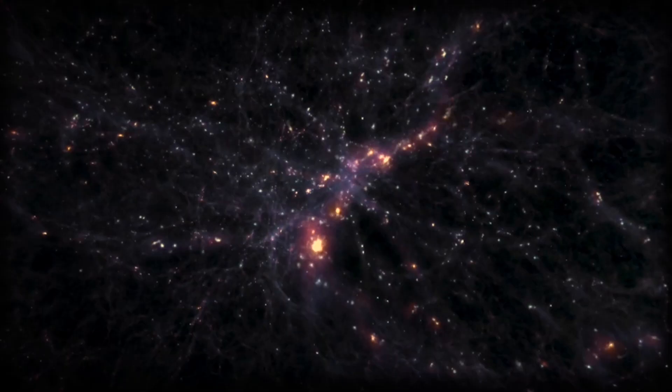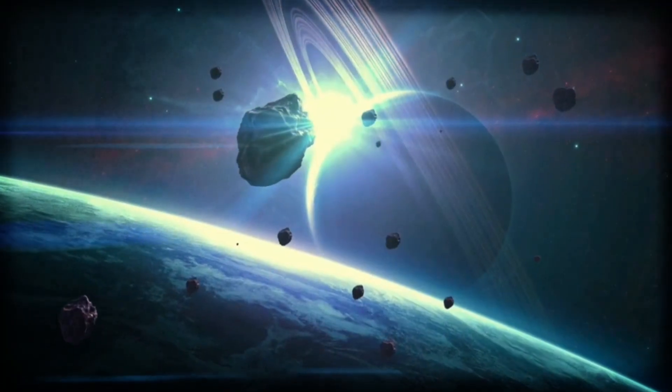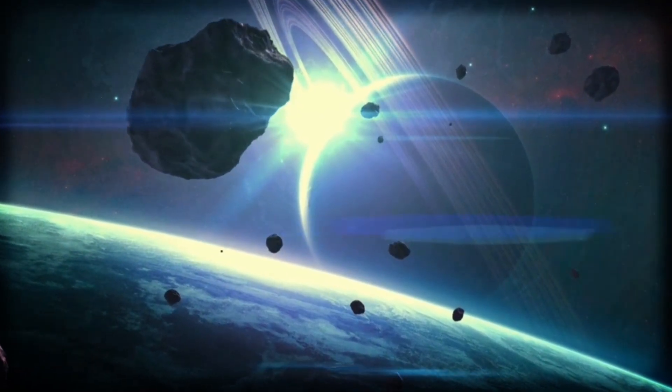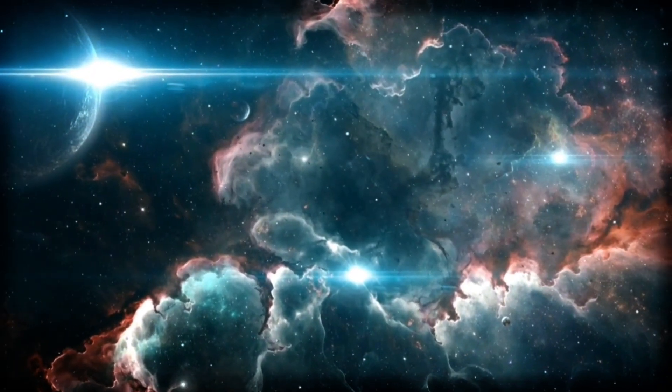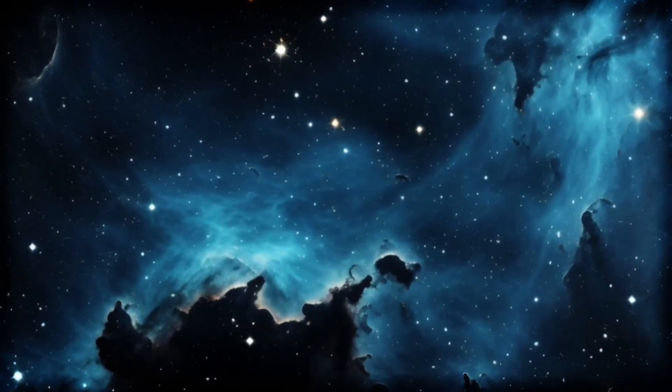This intense, stop-and-go process called bursty star formation could explain why those early galaxies were shining so brightly. They were literally lighting up the universe in rapid flashes. A cosmic, let there be light moment.